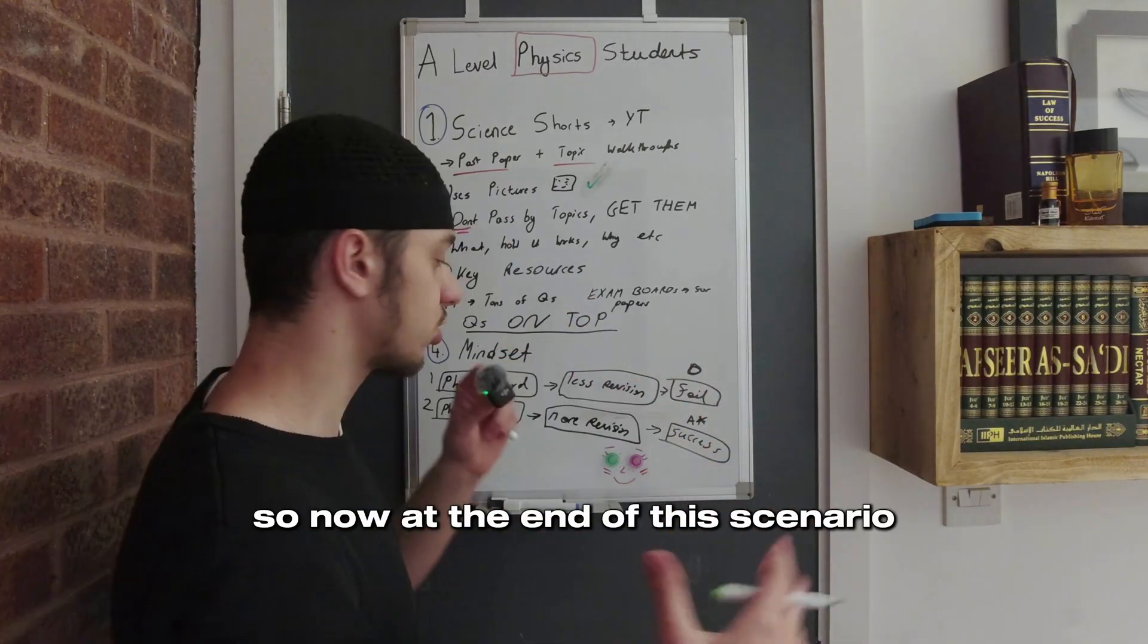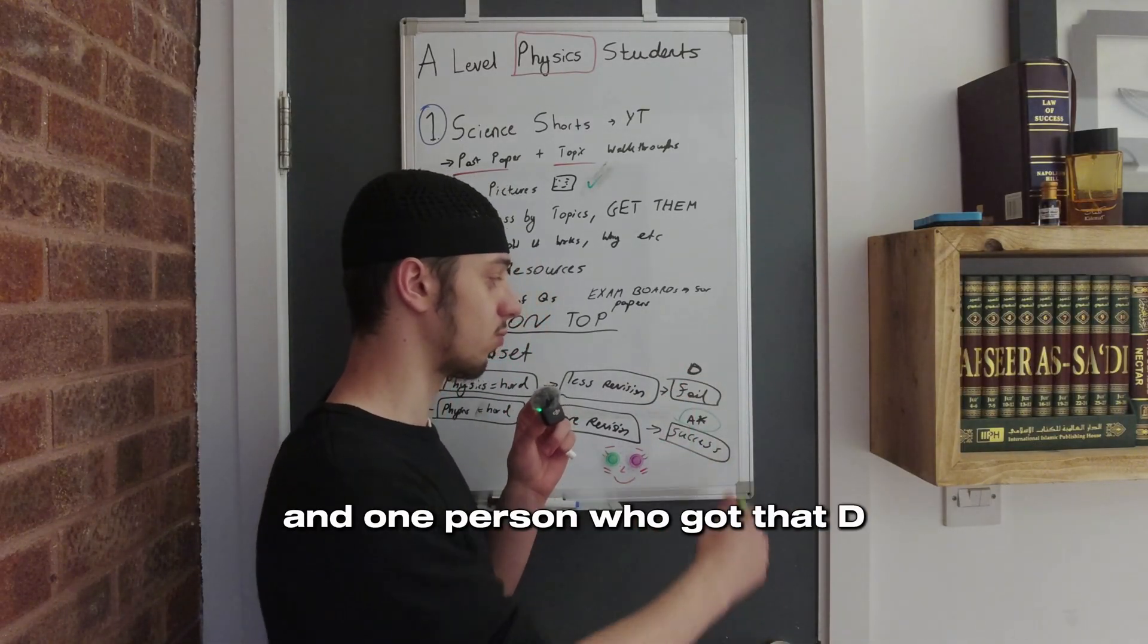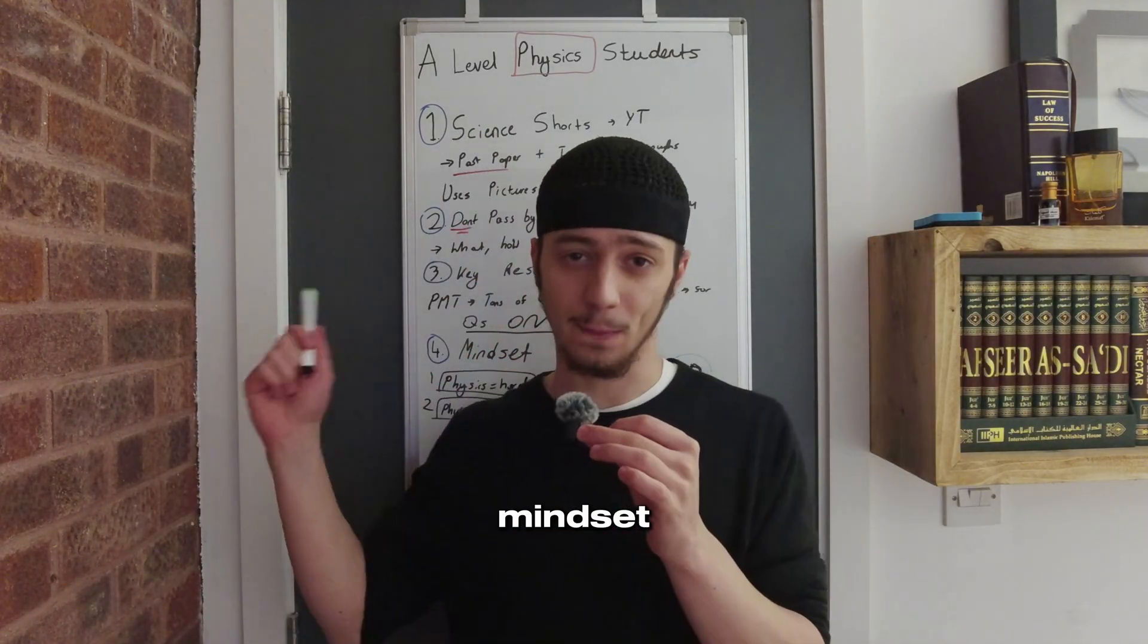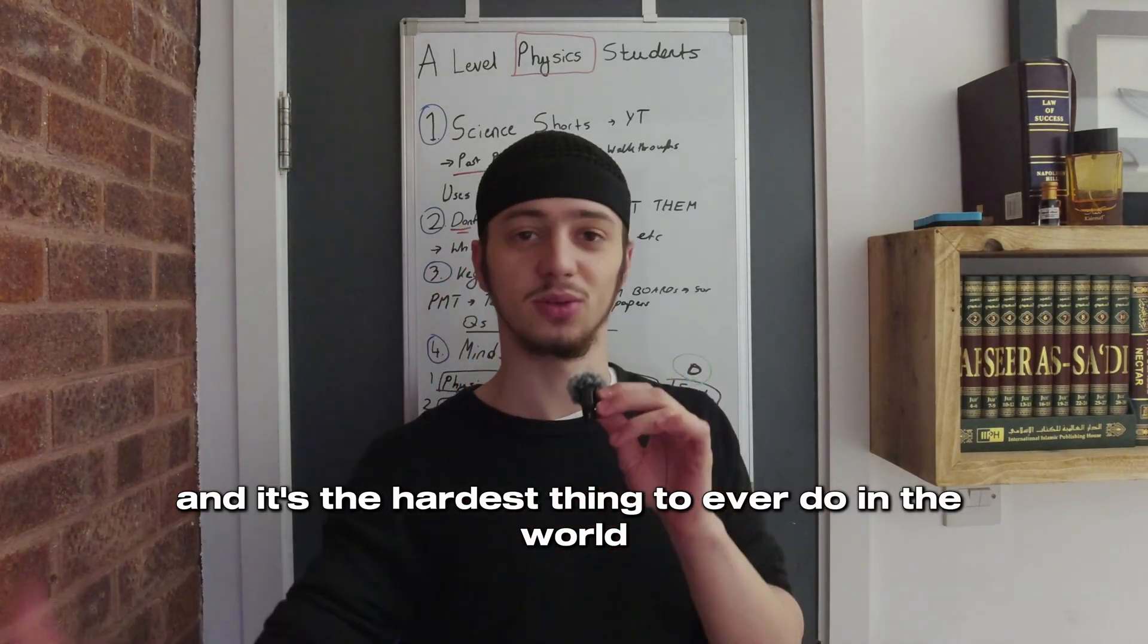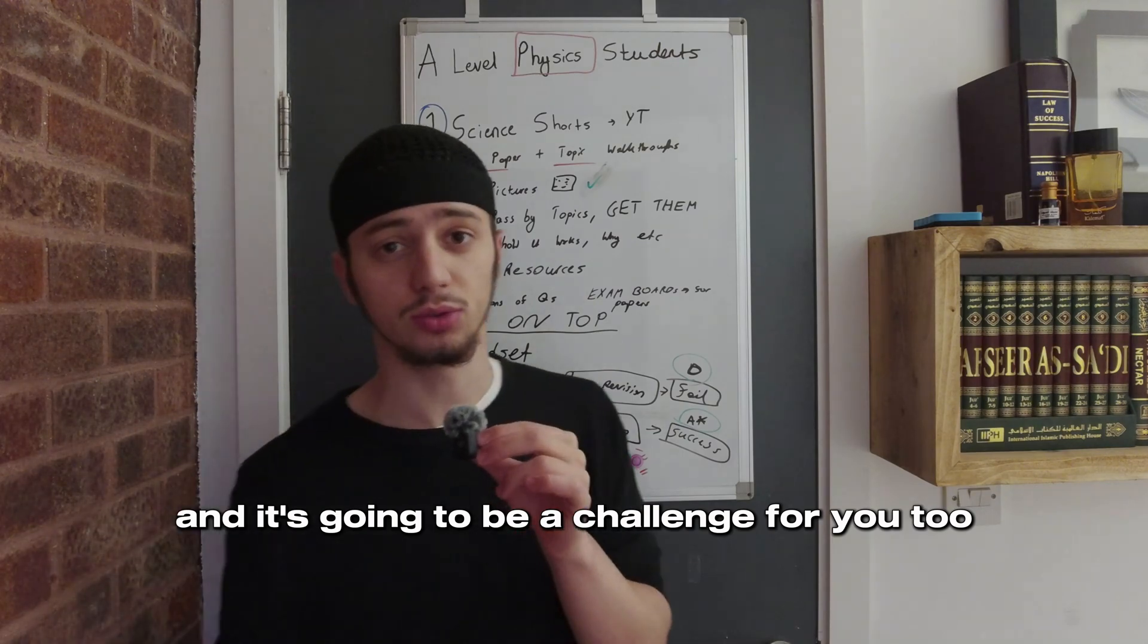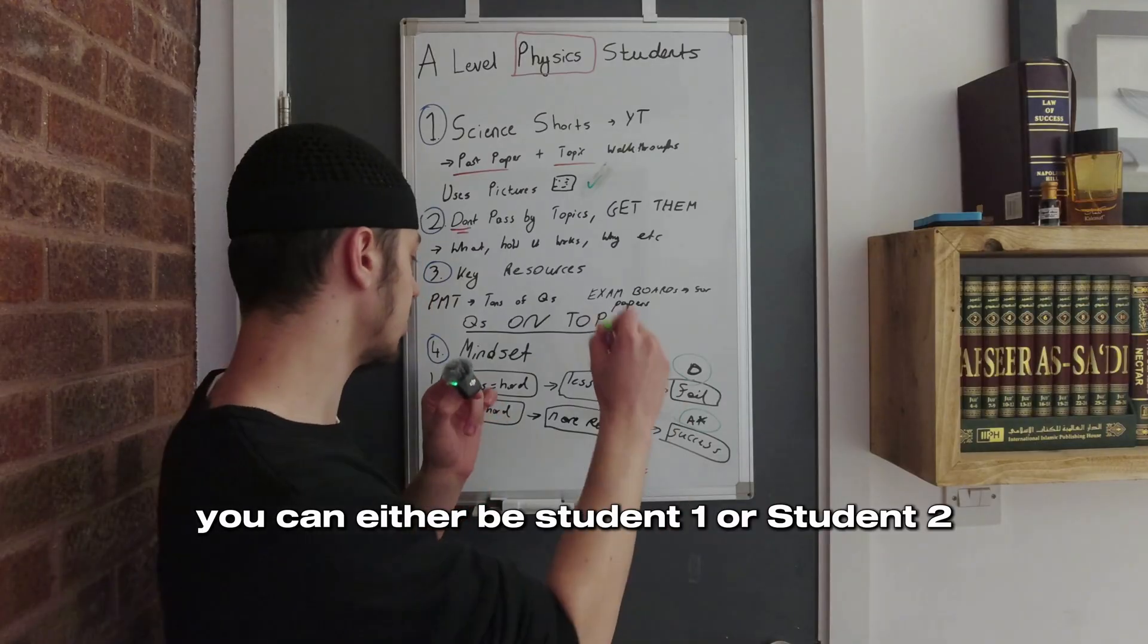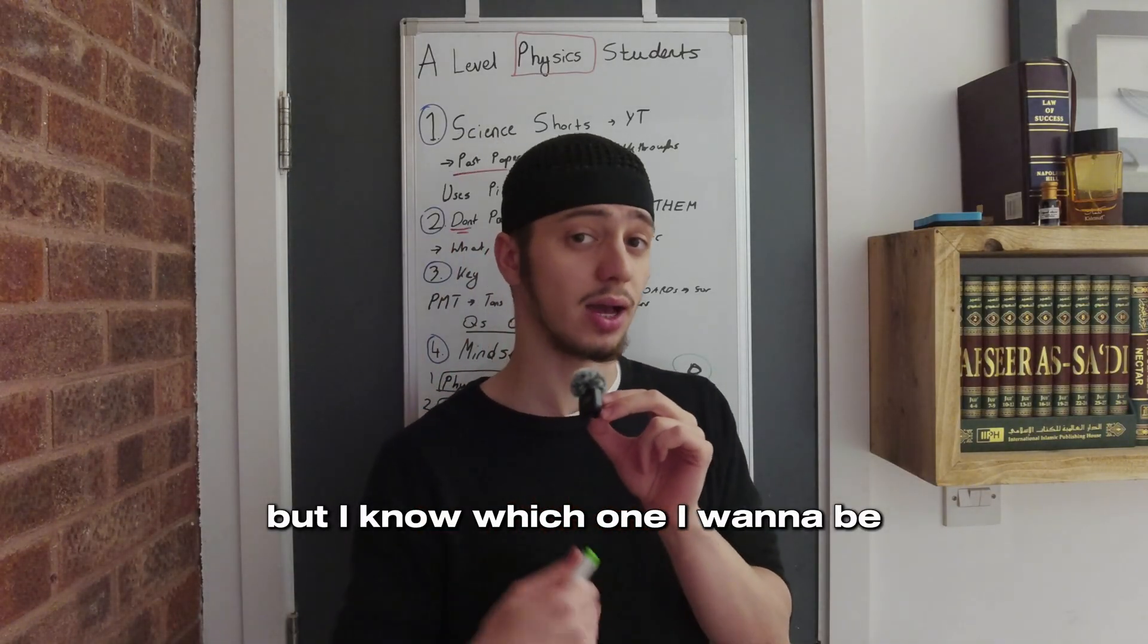At the end of this scenario, we have one person who got an A-star and one who got a D. The only difference between them? Mindset. I know I'm talking about physics as if you're going to war and it's the hardest thing ever, but A-level was a challenge and it's going to be a challenge for you too. All I'm trying to do is prepare you for the reality that your mindset will be challenged. You can either be student one or student two, and I know which one I want to be.